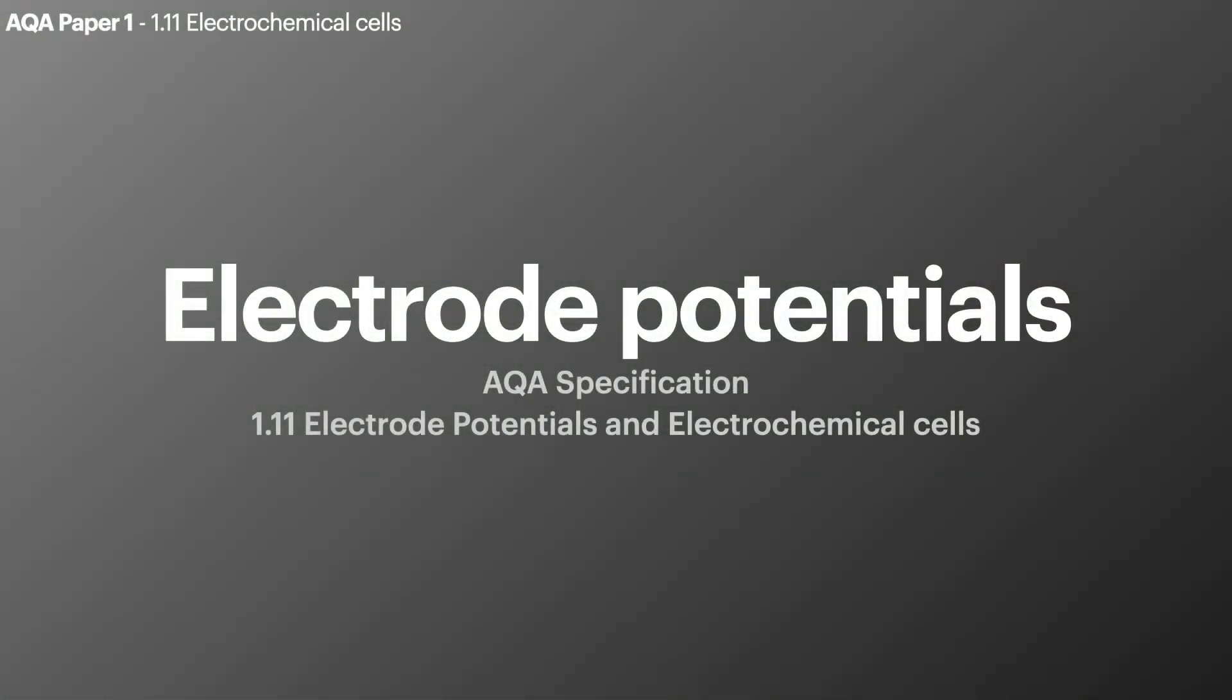Welcome, chemists, to another episode of Bale's Chemistry. Today is our second episode in our electrochemical cells topic, and we're going to dive into what an electropotential is and how we calculate the electrode potentials in the lab. This is AQA specification 1.11, electropotentials and electrochemical cells, and it appears on paper one of your final A-level exams.